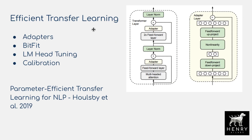Some chief strategies for more efficient transfer — in addition to prompting — include the adapter layer from "Parameter-Efficient Transfer Learning for NLP," where you introduce adapter layers and only fine-tune those, keeping the rest of the weights frozen. BitFit is where you only train the bias parameters — the B in WX+B. Language model head tuning is where you only tune the head, and calibration is another approach, which I believe is parameter-free.